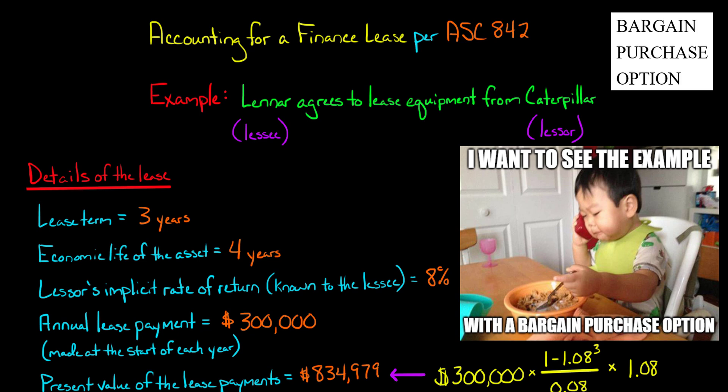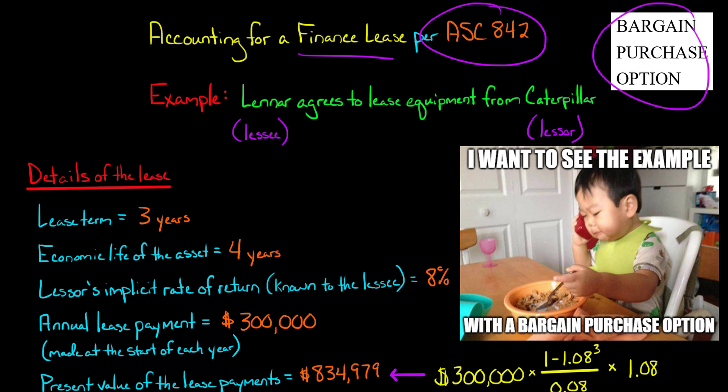In one of my last videos, I showed you how a lessee would account for a finance lease under ASC 842, which is US GAAP. But the lease I covered in that video did not contain a bargain purchase option. So what I want to do in this video is go through that same lease, but this time I'm going to add a bargain purchase option.